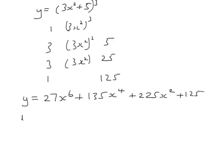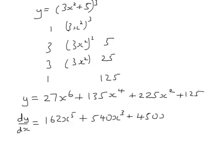So now we can differentiate. This was all about differentiating. So let's try and write dy by dx. So 6 times 27, that's 162x to the power 5. 135 times 4, that's 540x to the power 3. 225 times 2, that's 450x, and then 125 differentiates to 0.